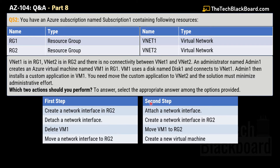For Step 2, the options are: attach a network interface; create a network interface card in RG2; move VM1 to RG2; or create a new virtual machine.